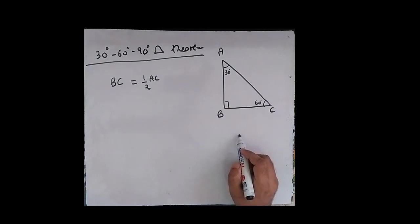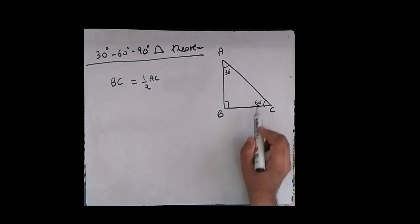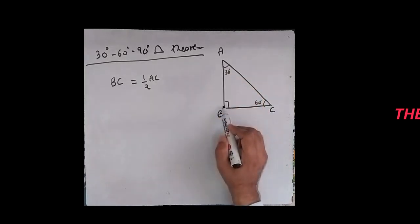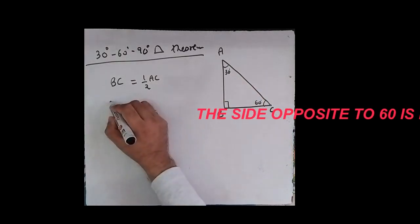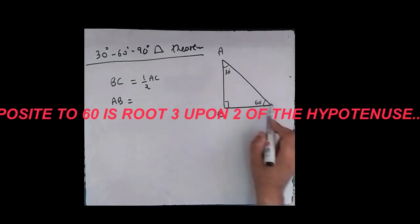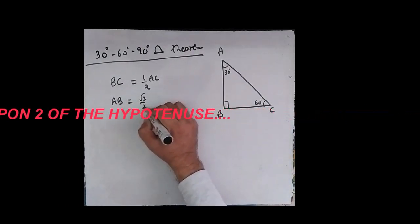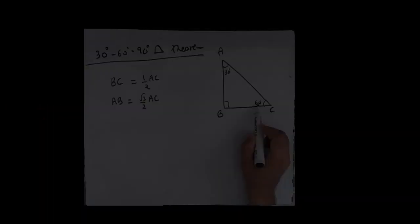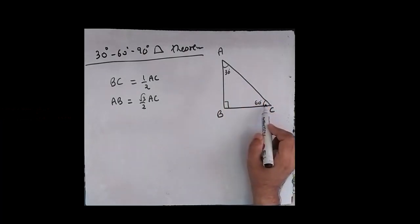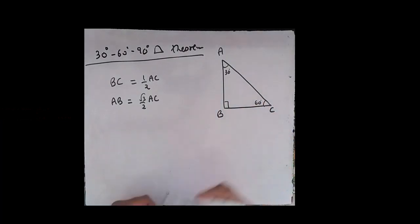The other part of this theorem concerns the side opposite to 60 degrees. Which side is opposite to 60 degrees? It is AB. The side opposite to 60 degrees is root 3 upon 2 of the hypotenuse. Side opposite to 60 degrees is (√3/2) of the hypotenuse.